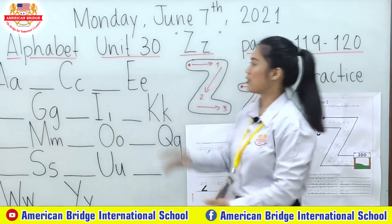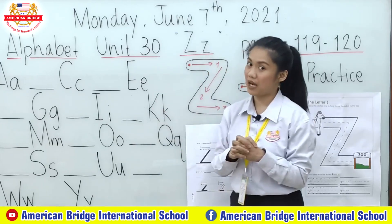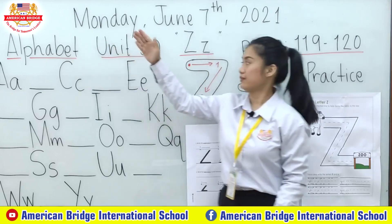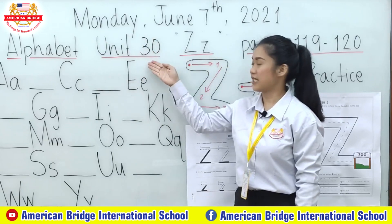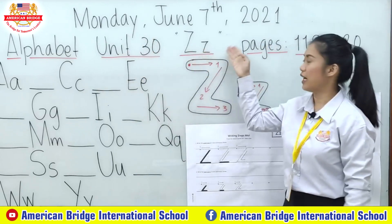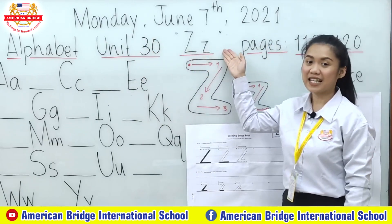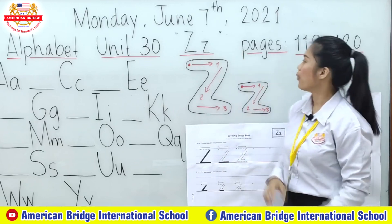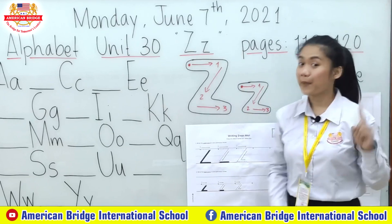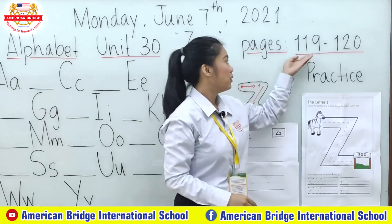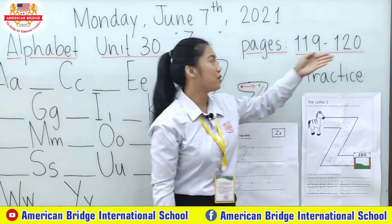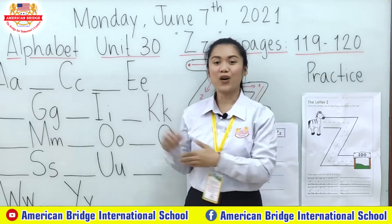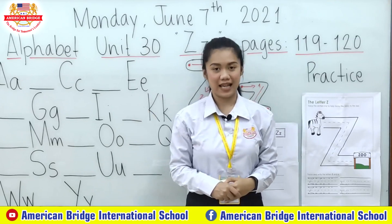As you can see everyone, this will be our lesson for today — Alphabet Unit 30, Letter Z. Yes, correct! We have a new letter today. Which page everyone? Pages 119 and 120. But first, let me review our previous lesson.